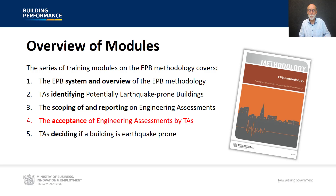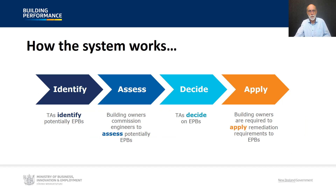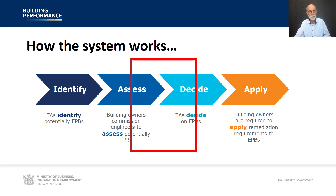This is the fourth of five modules covering the scope and application of the EPB methodology. The acceptance of engineering assessments sits right at the end of the assessment phase and overlaps with the decide phase, appearing within section 3 of the methodology.